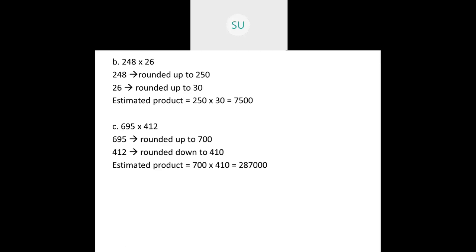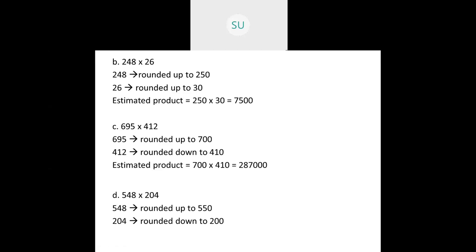Question 1D: 548 into 204. We round 548 to the nearest tens — it rounds up to 550. And 204 rounds down to 200. The estimated product is 550 into 200, which gives 1,10,000.